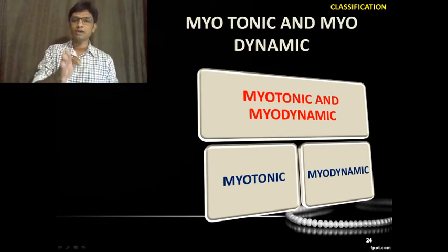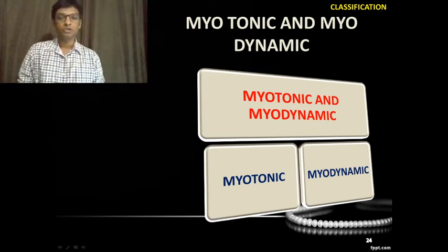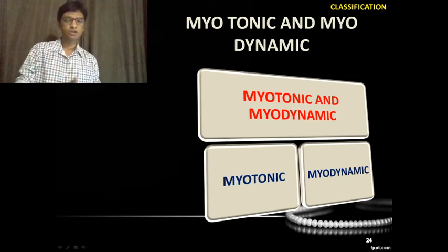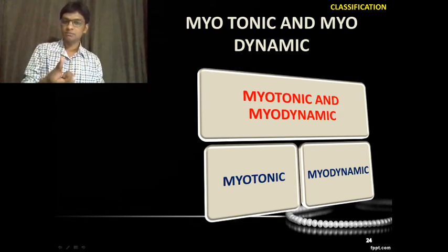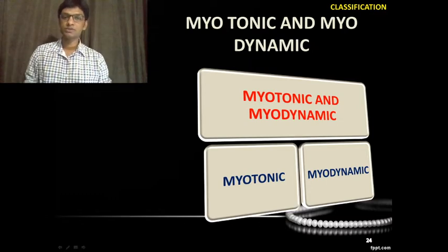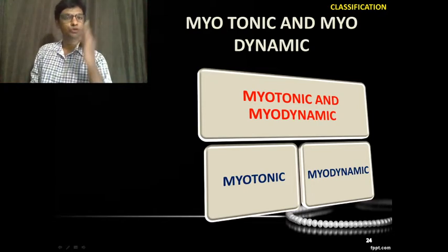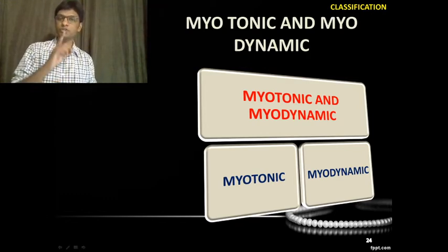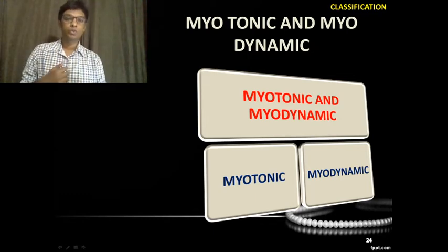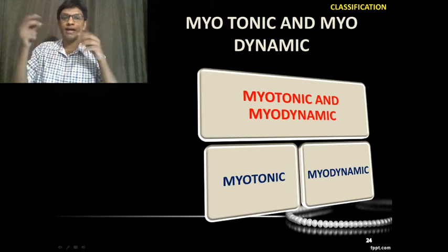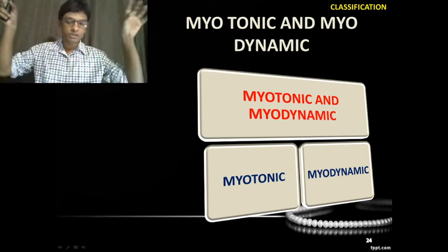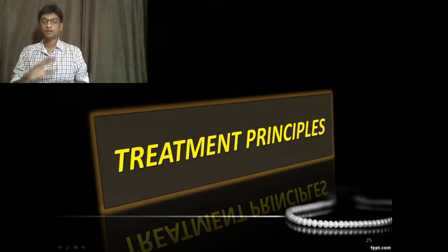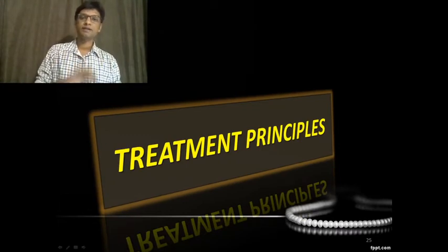Finally, myotonic and myodynamic appliances: myotonic means the appliance works on muscle tone and mass. Myodynamic means the appliance works on muscle movement — movement of muscles produces kinetic force, which is harnessed and delivered onto the tooth.